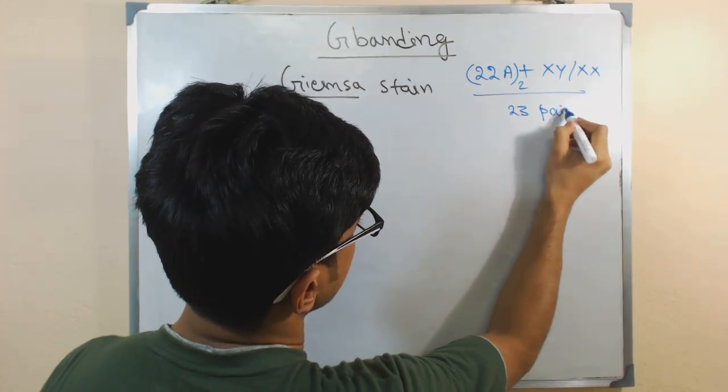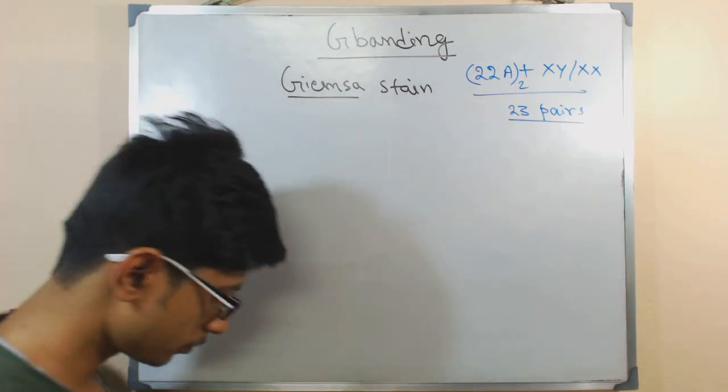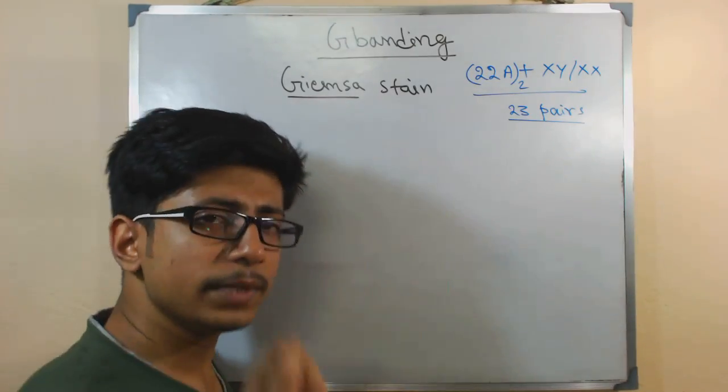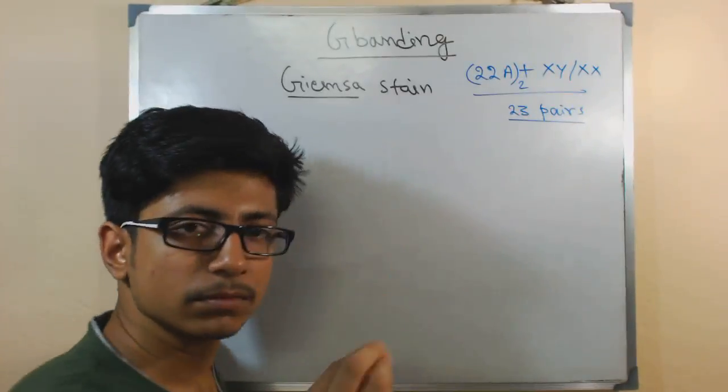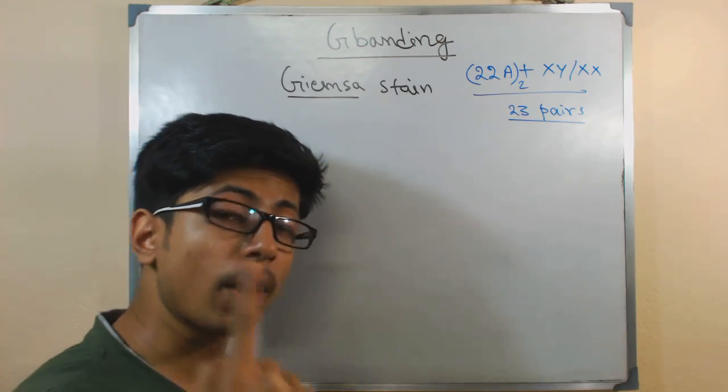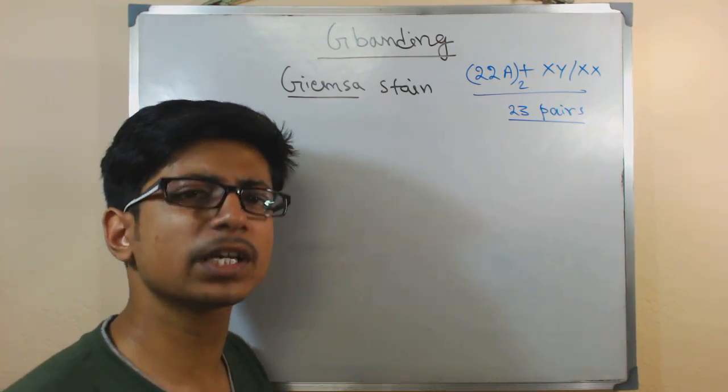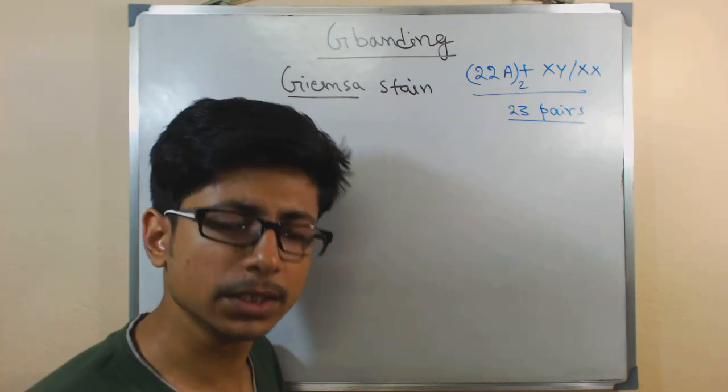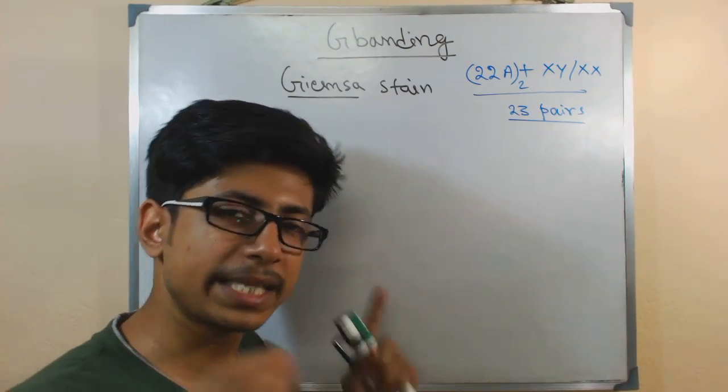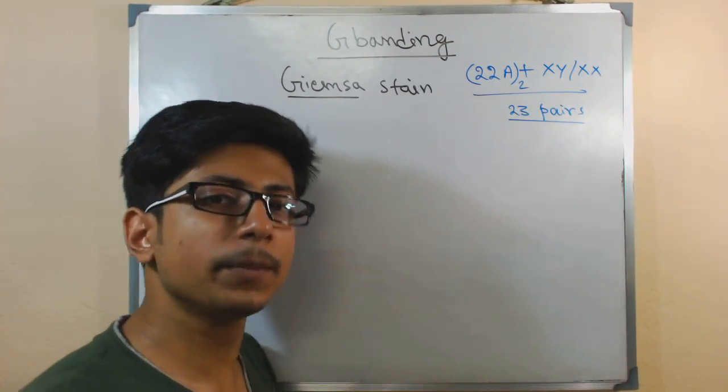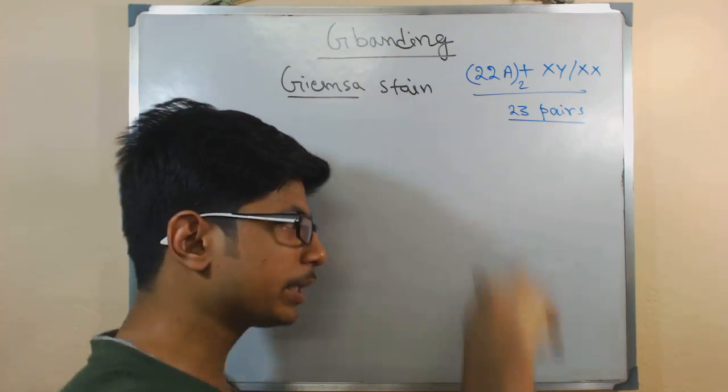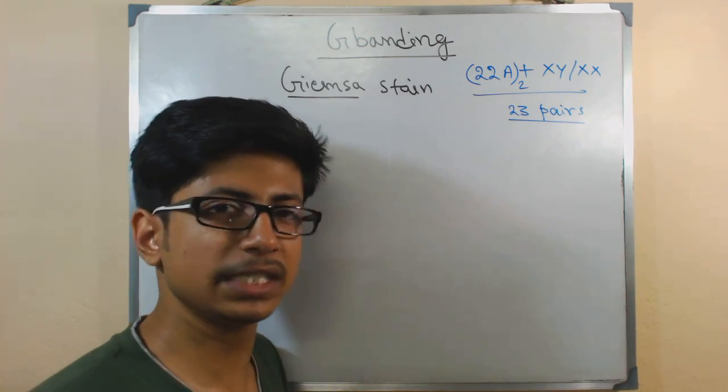So ultimately we have 23 pairs of chromosomes. Now what if we can stain all of these chromosomes with one particular dye? We don't need to bother about different colorations and all these things. Same color, but we can stain them with the same dye. We can find the position of the chromosome by looking through the microscope.